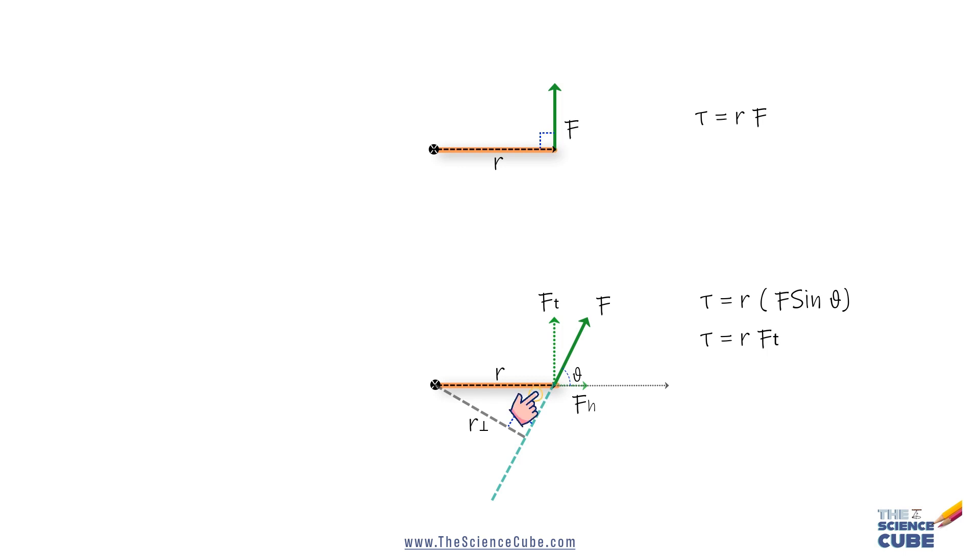In which case sin θ equals R perpendicular divided by the hypotenuse, which is R, or R perpendicular equals R sin θ. If you rearrange the terms like this, then we can say that torque equals R perpendicular times F.